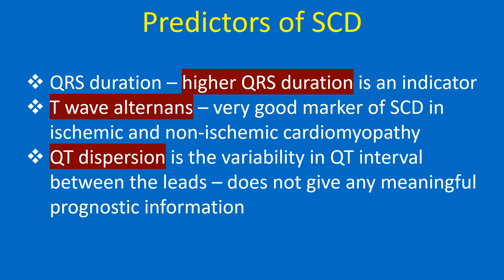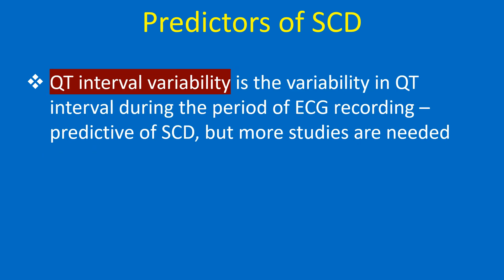QT dispersion is the variability in QT interval between leads, but does not give any meaningful prognostic information. QT interval variability refers to variability in QT interval during the period of ECG recording and is predictive of SCD, though more studies are needed.